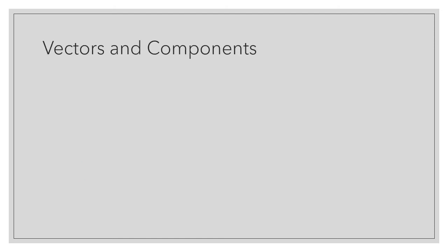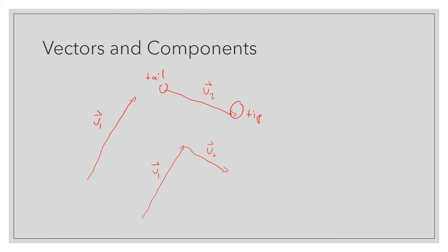Vectors can also be displayed by their components. First, I'll show you visually how vectors can be added. Vectors are always designated by a little arrow on top, indicating they are a vector as opposed to a scalar. Vectors are always added tip to tail — so the tip of V1 is connected to the tail of V2, and the resultant vector Vr goes from the tail of V1 to the tip of V2. So Vr is equal to V1 plus V2.